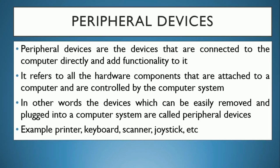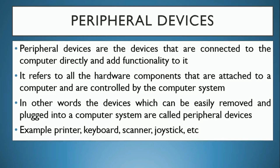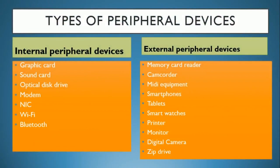Peripheral devices can also be easily removed. Examples include printer, keyboard, scanner, joystick, etc. Types of peripheral devices: Internal peripheral devices include graphic card, sound card, optical disk drive, modem, NIC, Wi-Fi, and Bluetooth. External peripheral devices include memory card reader, camcorder, MIDI equipment, smartphones, and tablets.